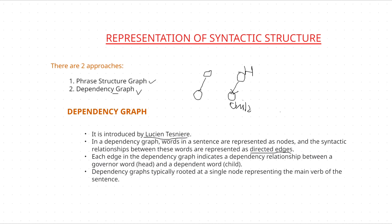Each edge in the dependency graph indicates a dependency relationship between a governor word — that is the head node — and a dependent word — that is the child node. This edge tells the relationship between the head word and the child word. Dependency graphs are typically rooted at a single node representing the main verb of the sentence. In phrase structure graph we took 'S' as the root node, but in dependency graph you take the main verb in the sentence as the root node.